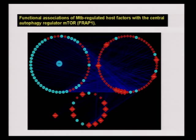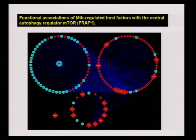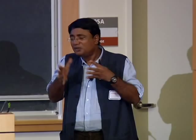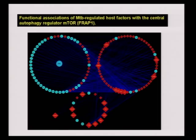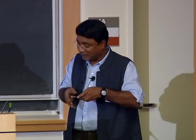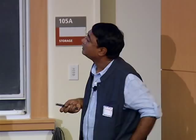Direct regulation sometimes doesn't give you the level of plasticity that indirect regulation can. It's much like rumors — you can create havoc by increasing the number of steps between you and the information. This allows more fine-tuning, and we presume this distal regulation also makes it more difficult to rationalize and understand the mechanisms by which mycobacteria control the autophagic pathway.